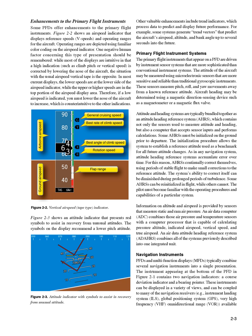Navigation instruments. PFDs and multifunction displays, MFDs, typically combine several navigation instruments into a single presentation. The instrument appearing at the bottom of the PFD in Figure 2-1 contains two navigation indicators: a course deviation indicator and a bearing pointer. These instruments can be displayed in a variety of views and can be coupled to many navigation receivers, for example, Instrument Landing System, ILS; Global Positioning System, GPS; and VHF Omnidirectional Range, VOR.